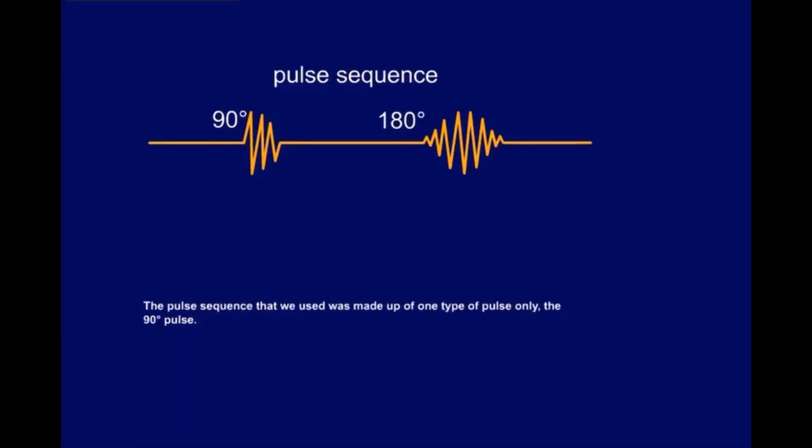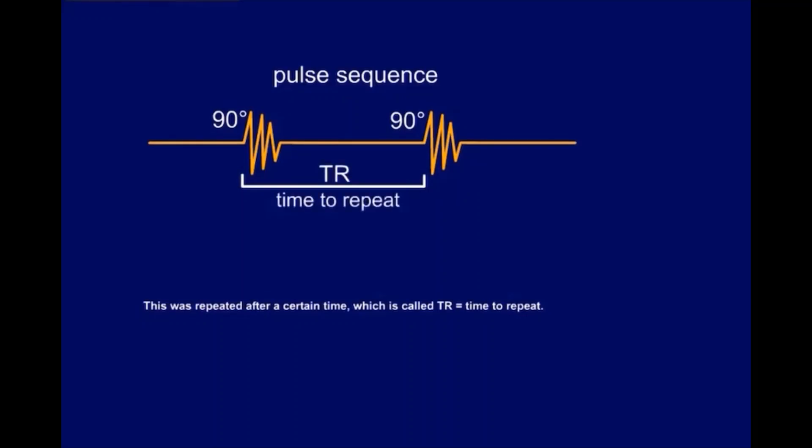The pulse sequence that we used was made up of one type of pulse only, the 90 degree pulse. This was repeated after a certain time, which is called TR, time to repeat.